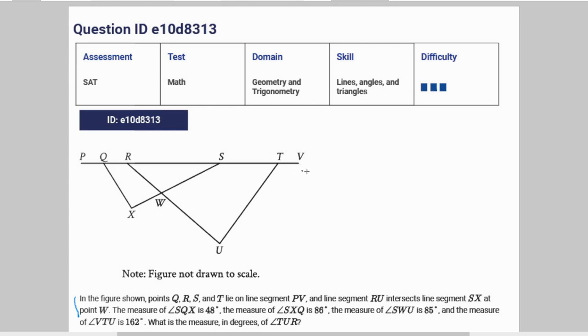So okay, the measure of angle SQX—this is actually important information though—so we're going to write down every angle it gives us. SQX is 86°, RSW is 85°, and VTU is 162°.